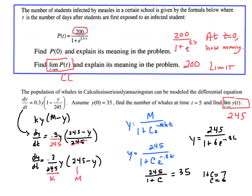So if I wanted to know how many whales were there at time 5, I would just plug 5 in for t. There's a whole proof of why that works in another video. In the interest of time I didn't recreate that, but it is a separable differential equation and then you use partial fractions — it's a lot of work.